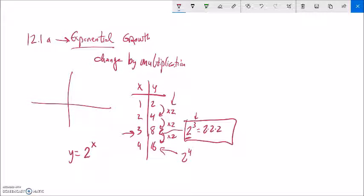So exponential growth in a table, we can see this change right here as multiplication. In an equation, our variable is in the exponent. So the variable is up here in the exponent. That'll make it exponential.